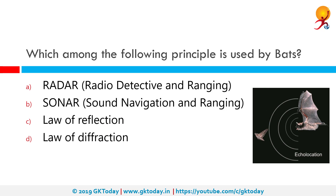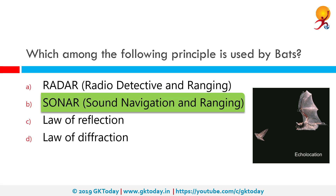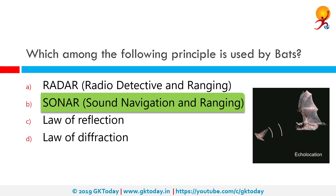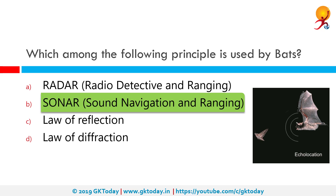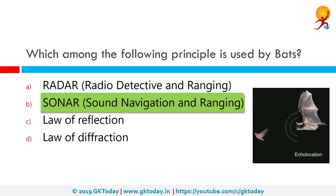Which among the following principle is used by bats? The correct answer is sonar. The actual process is echolocation, also known as biosonar, which is a method used by several kinds of animals. In 1912, the inventor Hiram Maxim independently proposed that bats use sound below the human auditory range to avoid obstacles.